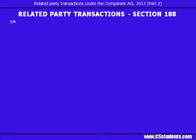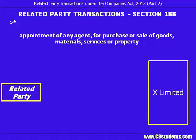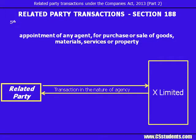Fifth: appointment of any agent for purchase or sale of goods, materials, services or property. This point relates to the appointment of any agent. So if the company is appointing its related party as its agent, or any related party is appointing the company as its agent, both sets of transactions could be done only with compliance of Section 188.